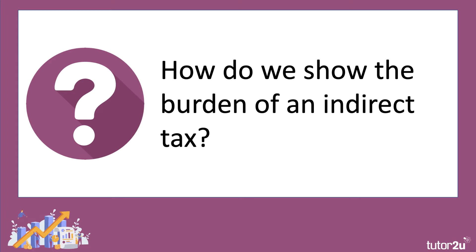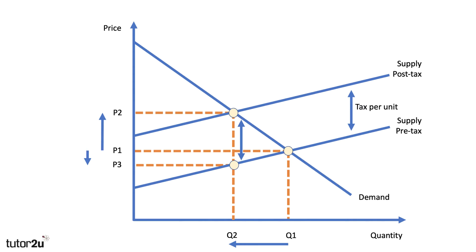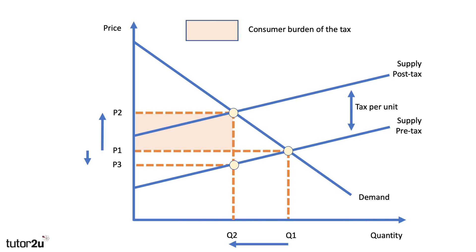The key question is: how do we show the burden of the tax — who is paying it, the producer or the consumer, or perhaps both? The tax per unit is the vertical distance between the pre- and post-tax supply curves. The price has gone up from P1 to P2, but that's not quite the same as the vertical distance between the two supply curves. It looks as if the producer has managed to pass on most of the tax to the consumer, but there is a small portion — P1 to P3 — which the producer must still pay. The consumer burden is the increase in price from P1 to P2, and the total tax per unit is P2 to P3.